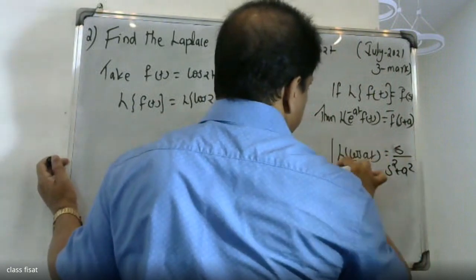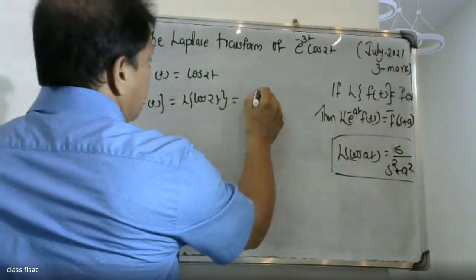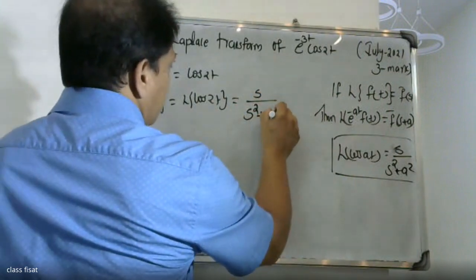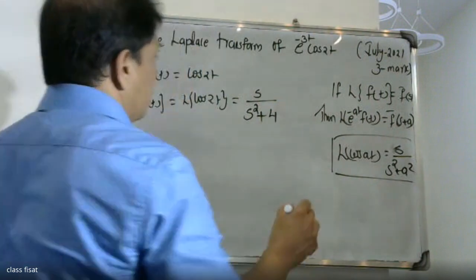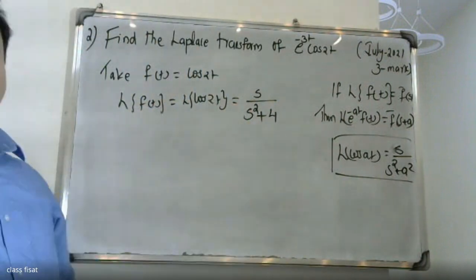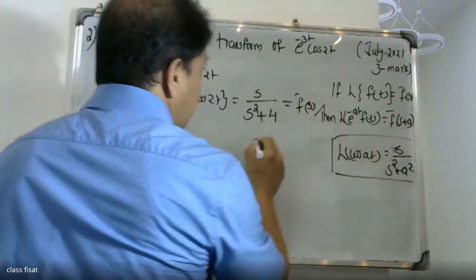So the formula for Laplace transform of cos at is s divided by s squared plus a squared. Here a equals 2, so L of cos 2t equals s divided by s squared plus 4. This is f bar of s.